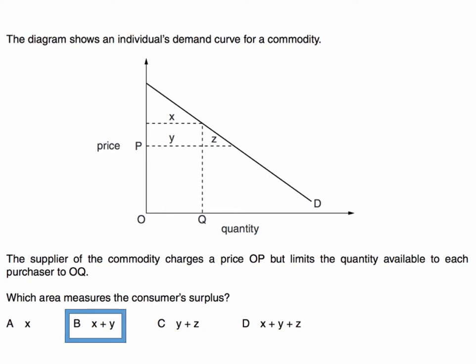Consumer surplus is, of course, a measure of welfare. It's the area beneath the demand curve and above the price. The difference between what the consumer is willing to pay and able to pay, and what the consumer actually has to pay. So the price charged is P, the output is Q, so clearly X plus Y is consumer surplus. It lies above the price and below the demand curve.